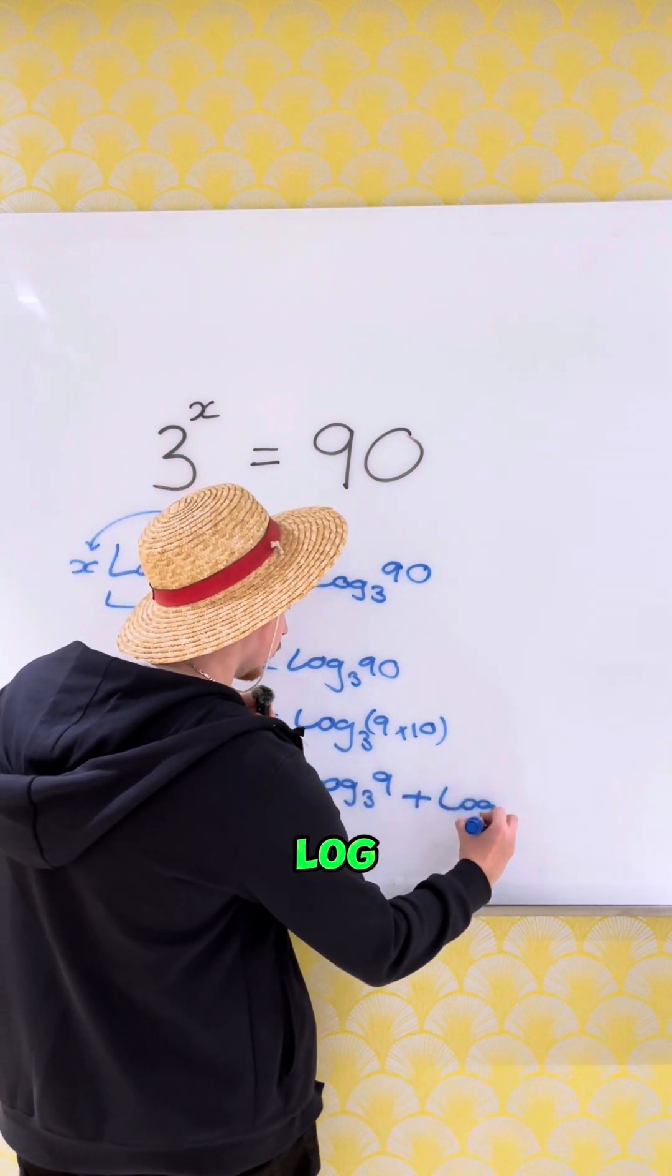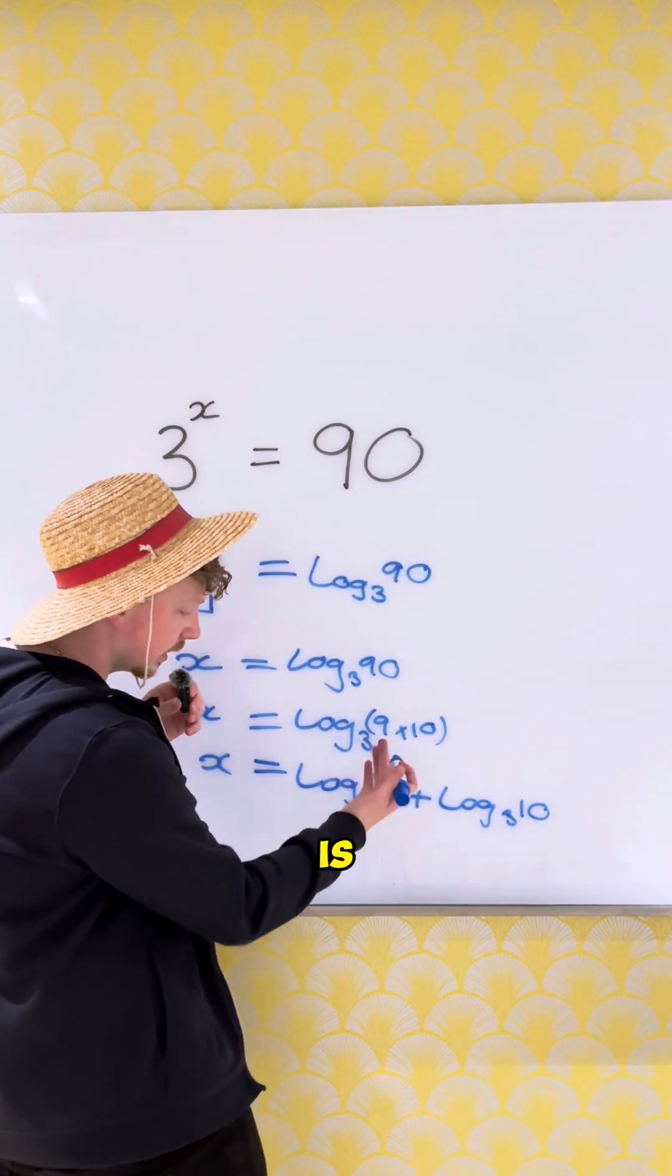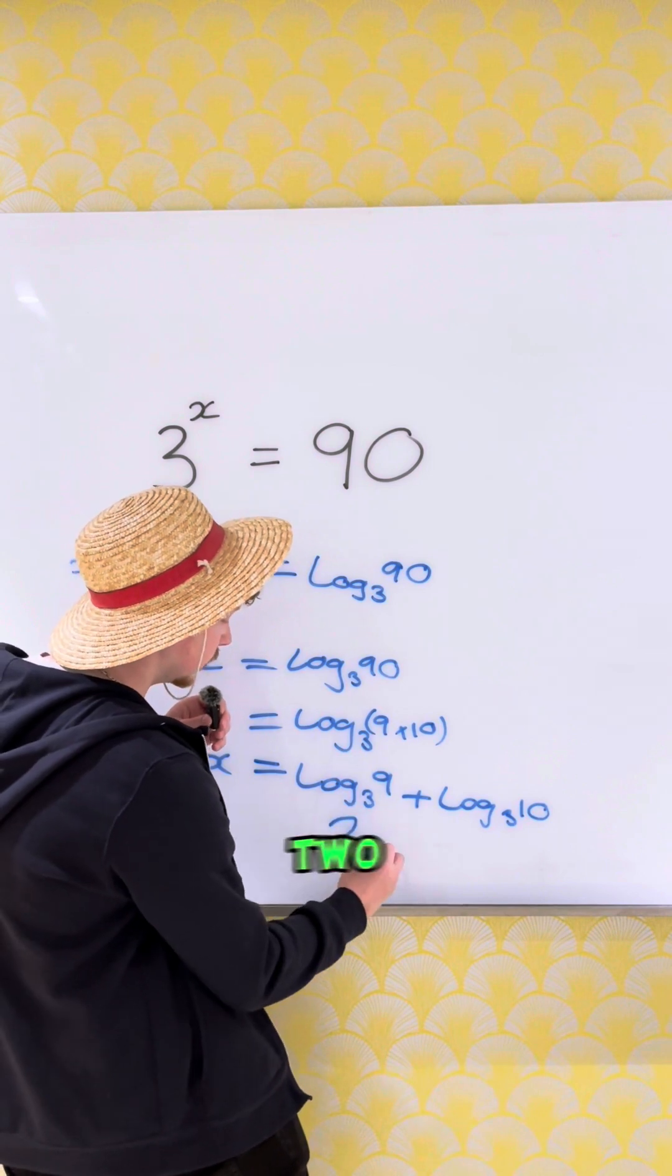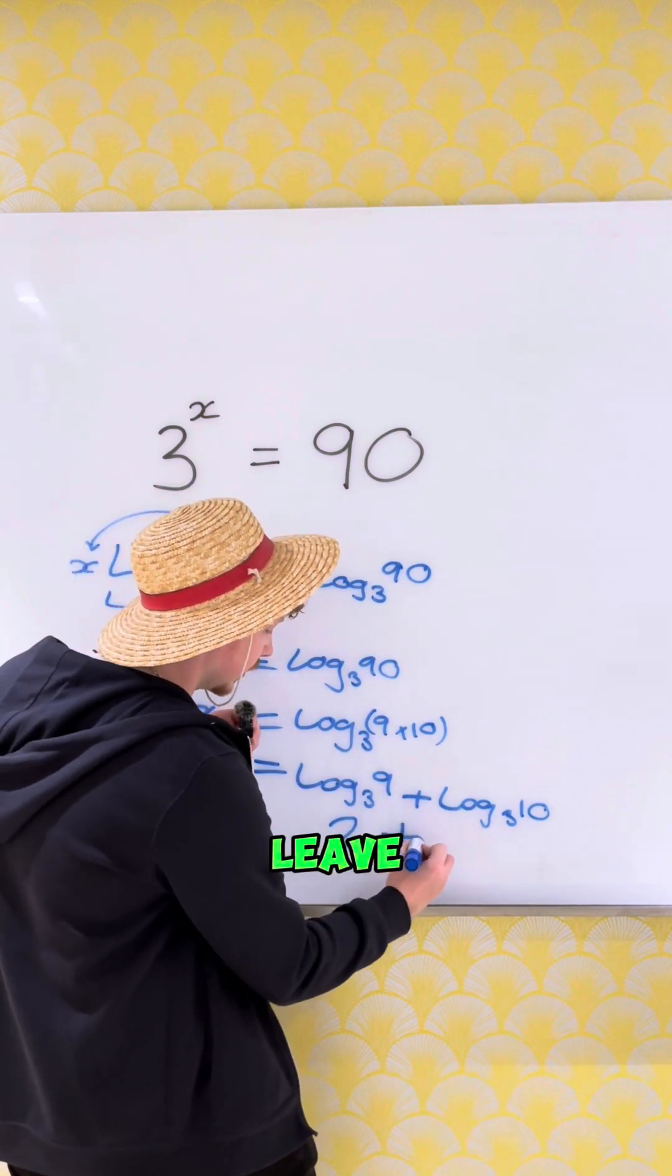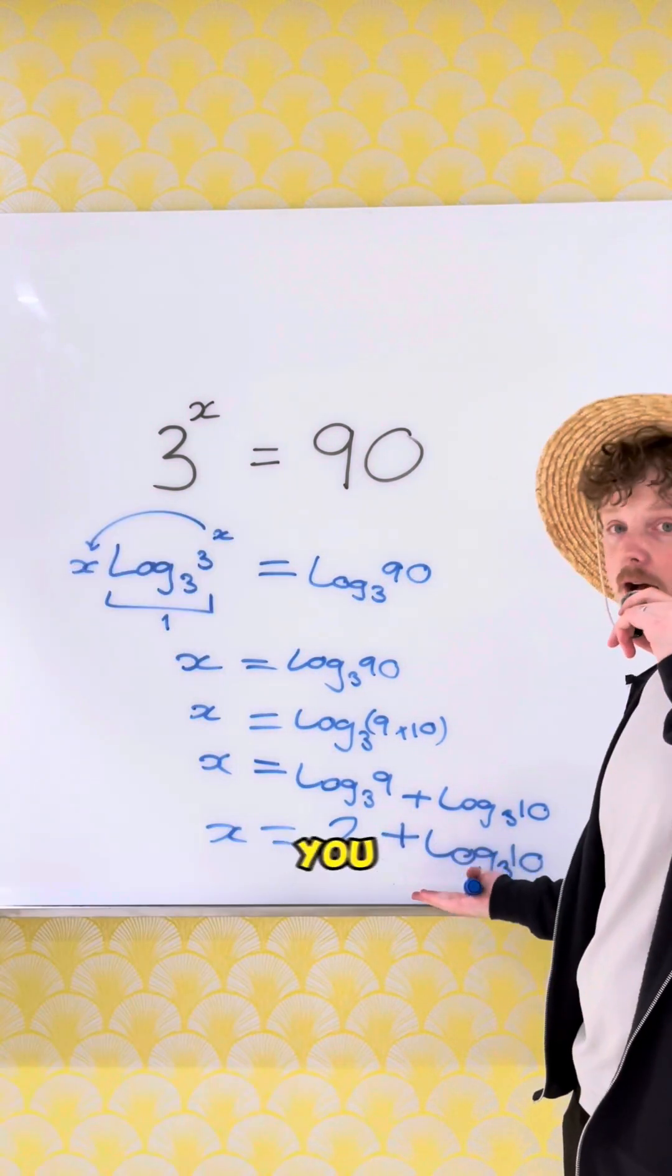plus log base 3 of 10 equals x. 3 to the power of what is 9? We know that's just 2. And we can just leave this in your calculator, and there you have it.